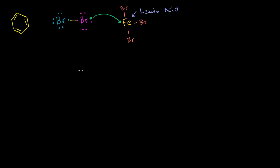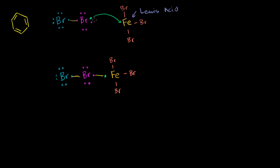Then what do we have? The blue bromine retains seven valence electrons. The magenta bromine now only has six valence electrons — the seventh got nabbed by the iron. So the iron now has that seventh electron, and the iron remains attached to its three bromines. Because the magenta bromine lost an electron from being neutral, it now has a positive charge. And the iron, now that it gained this electron, now has a negative charge.